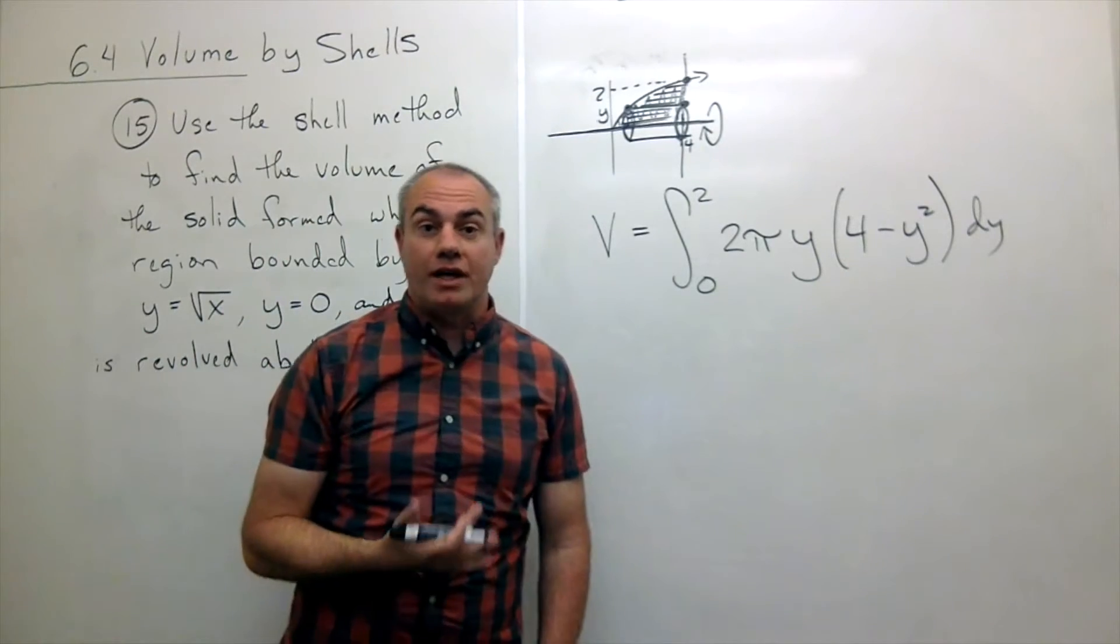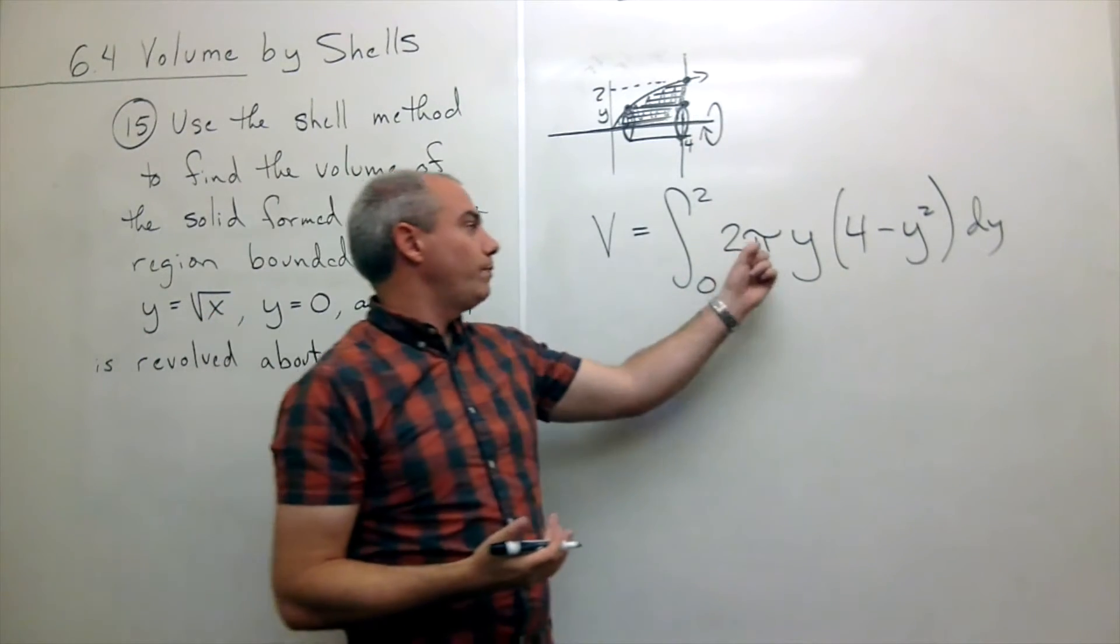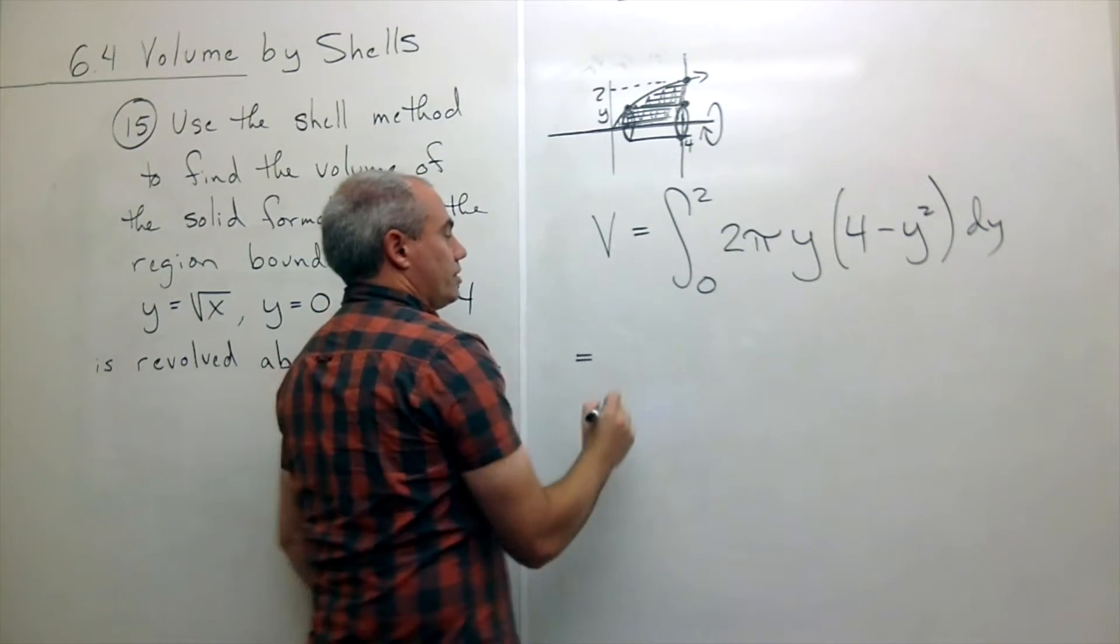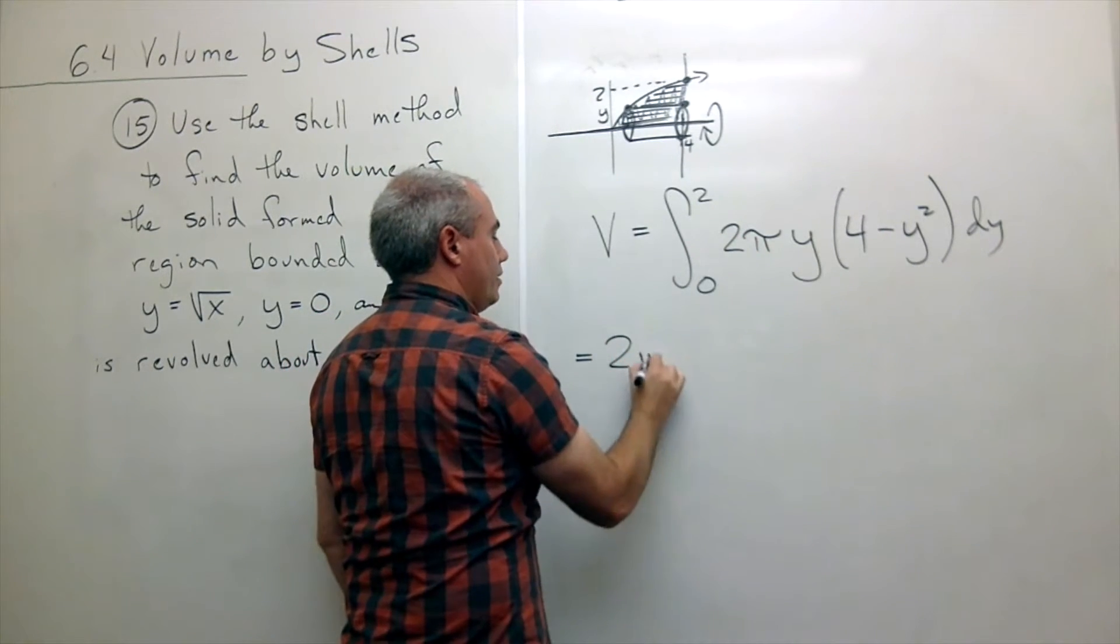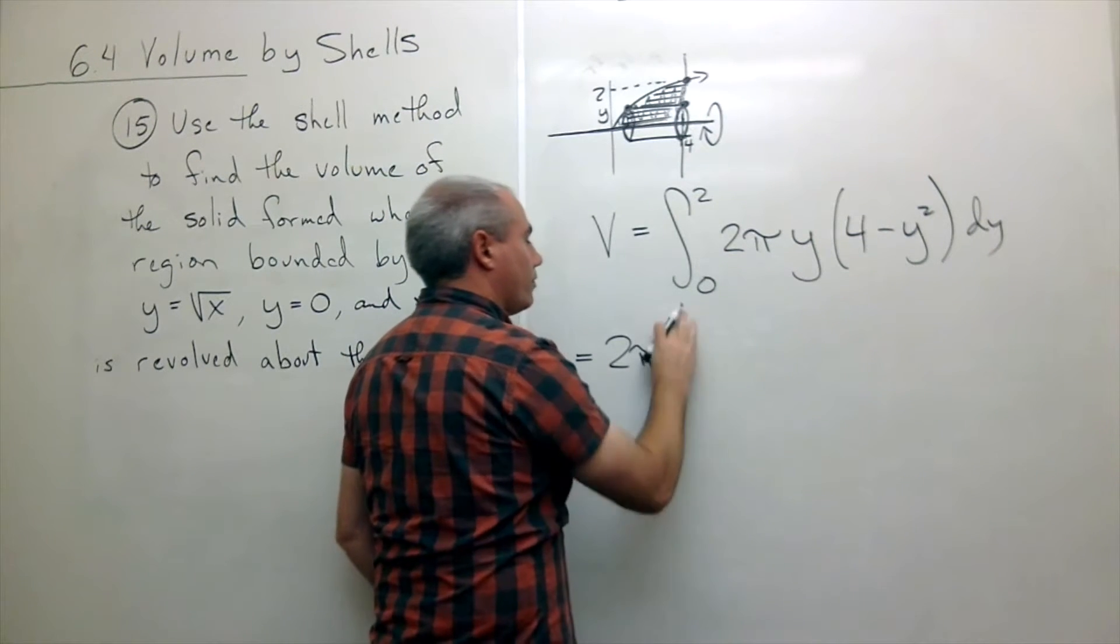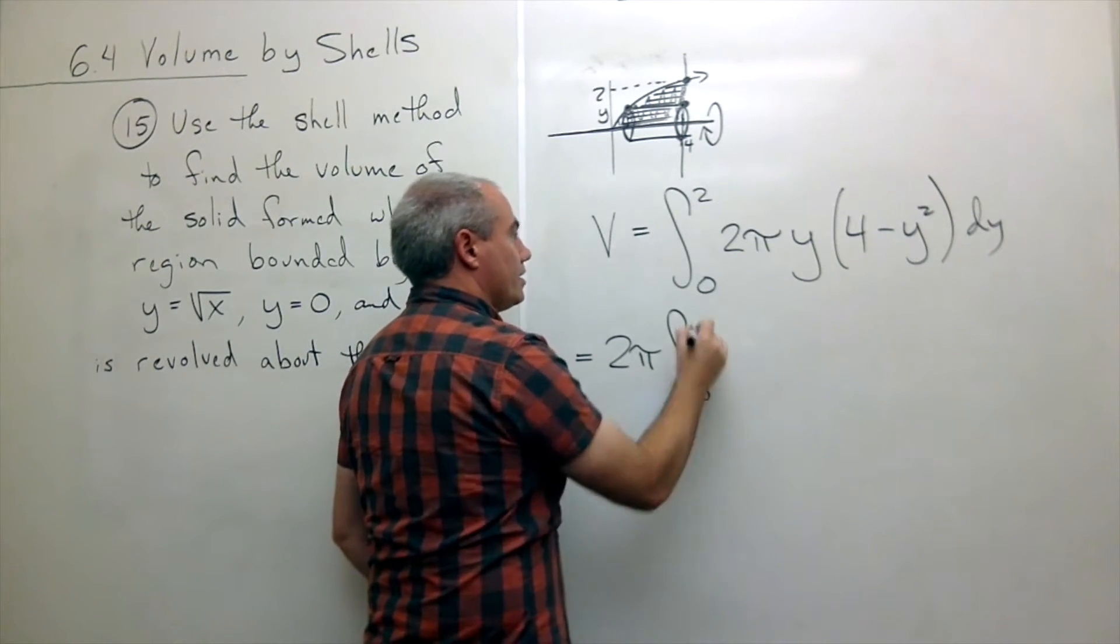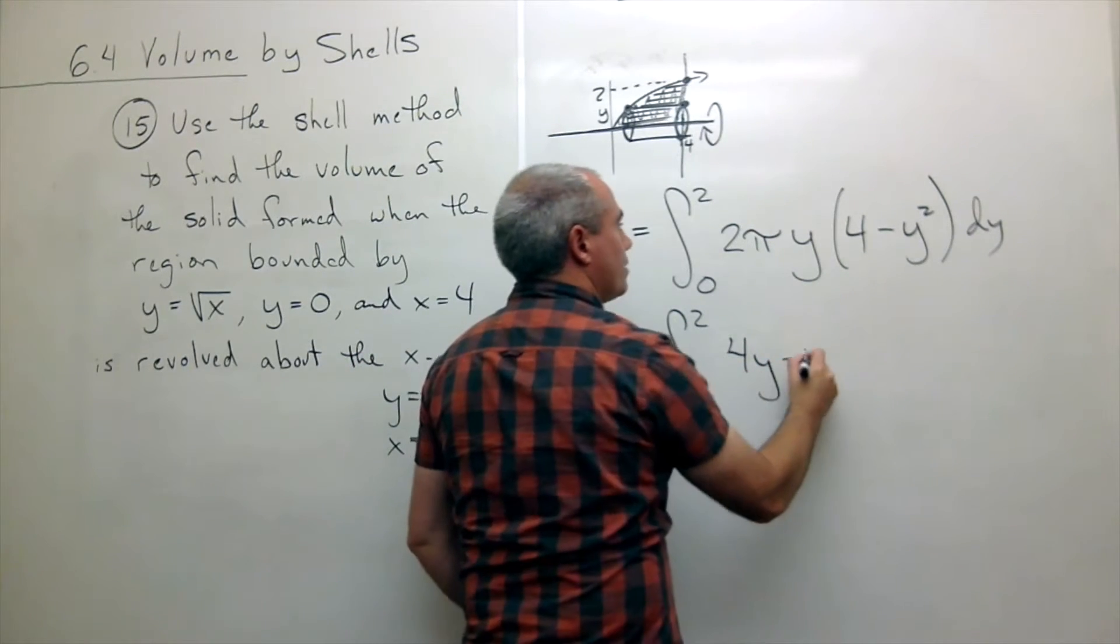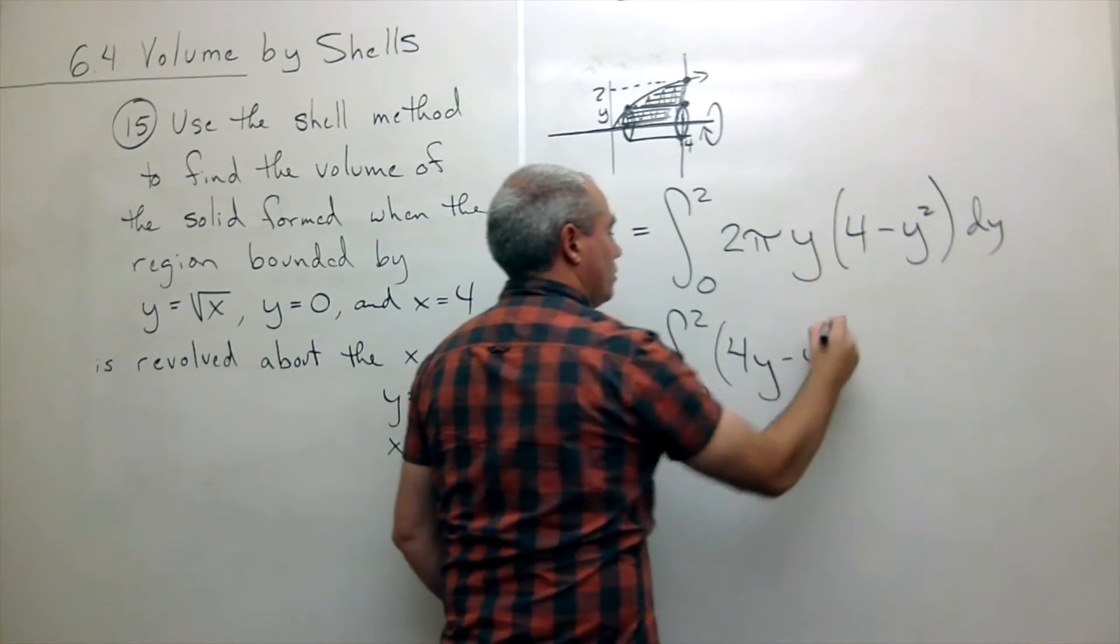Now we're ready to integrate this thing. I have 2 pi r h. So let's do it. Pull out the 2 pi, and I still want an integral sign. I'm not quite ready to integrate. I get 0 to 2 of 4y minus y cubed dy.